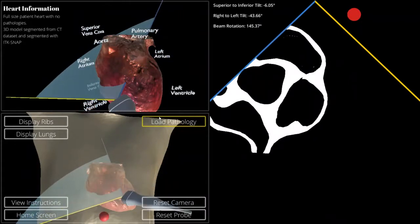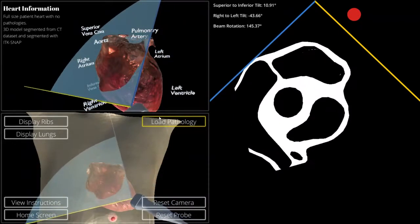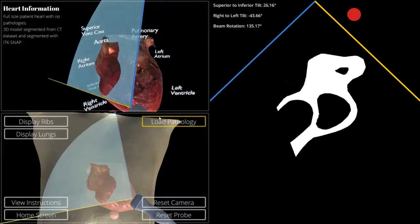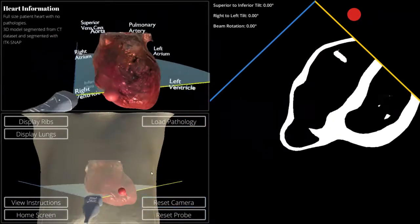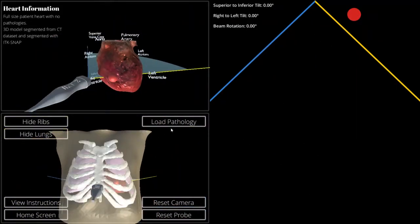So you can see what happens when we do an ultrasound exam without anything occluding it. We'll reset the probe here, reset the camera, and get the ribs and lungs back in.